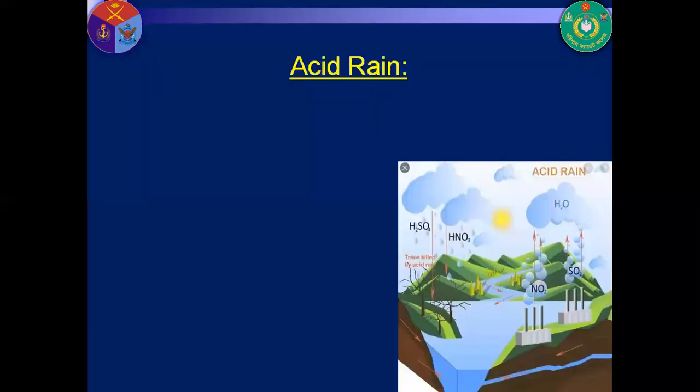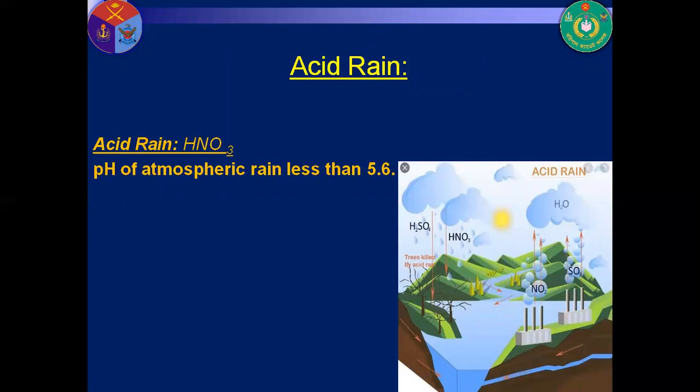Acid rain: the rain with pH less than 5.6 is acidic. When different types of acids are mixed with the rain water, the rain is called acid rain, and its pH is less than 5.6.